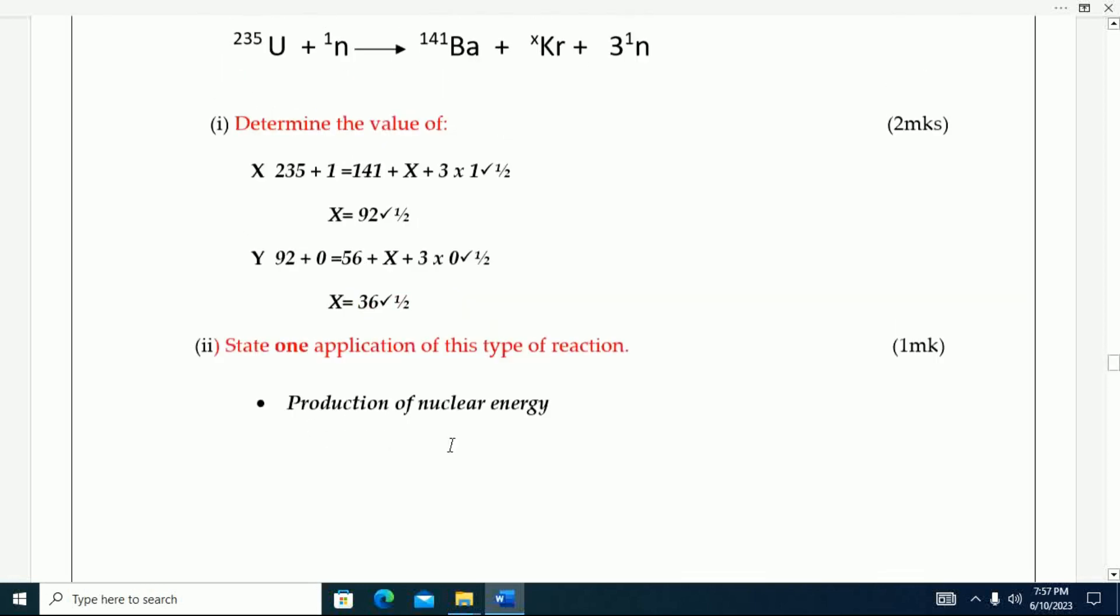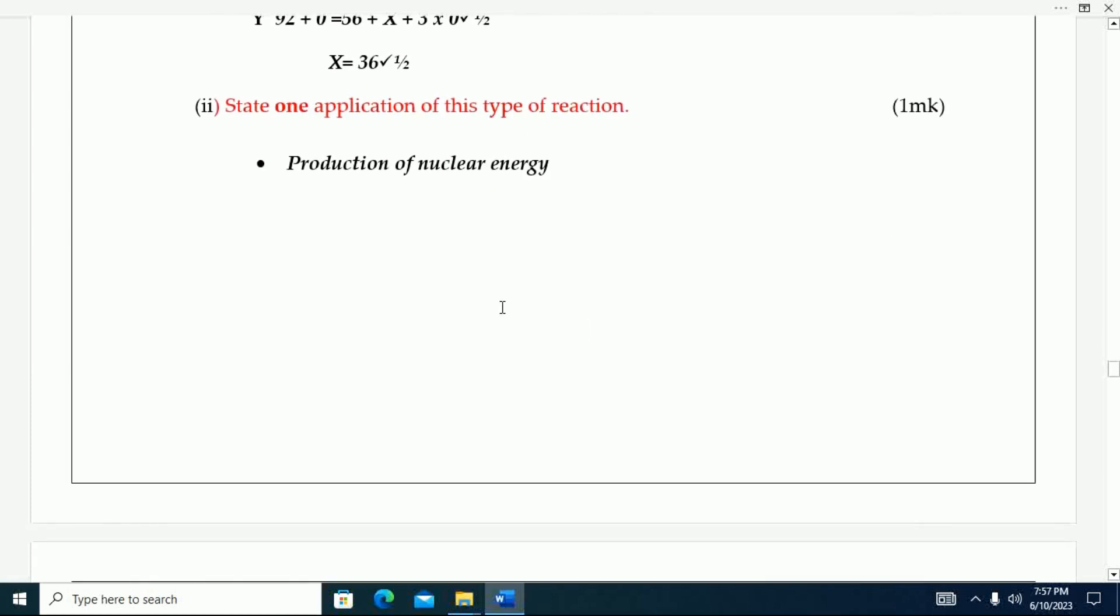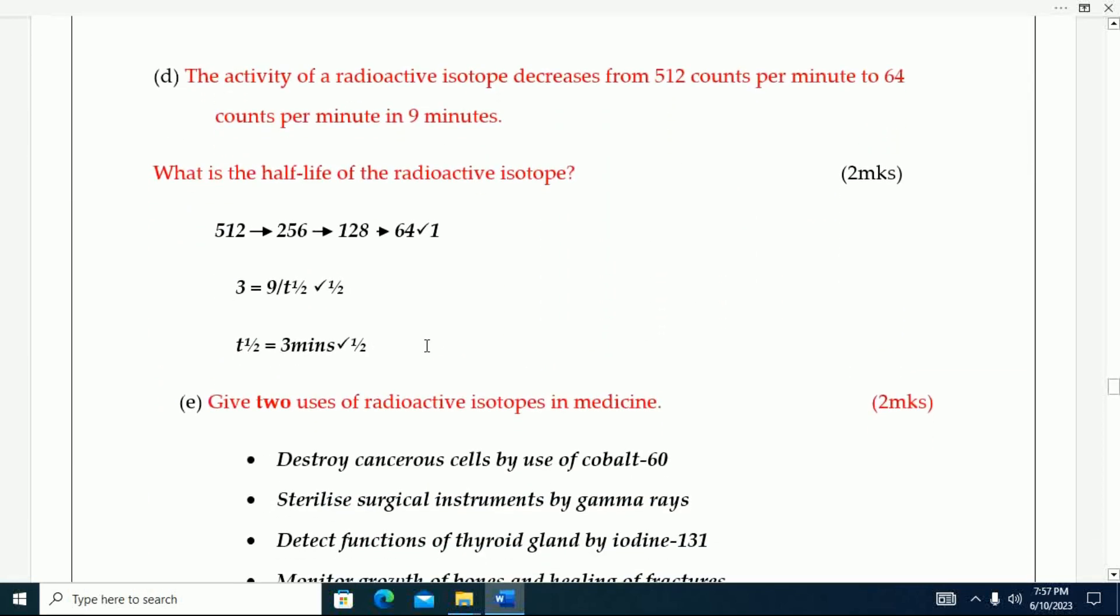The activity of a radioactive isotope decreases from 512 counts per minute to 64 counts per minute in nine minutes. What is the half-life of the radioactive isotope? This is how you calculate that.